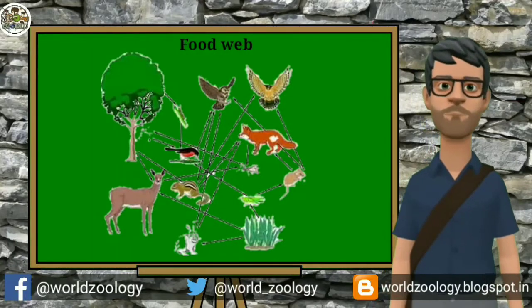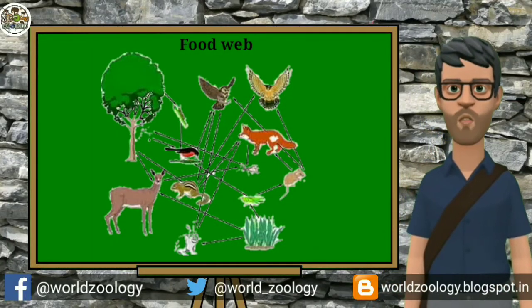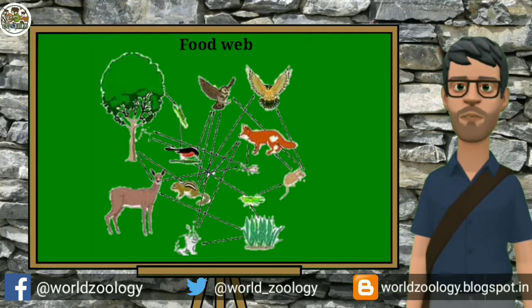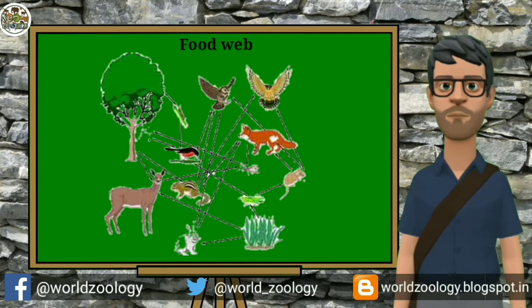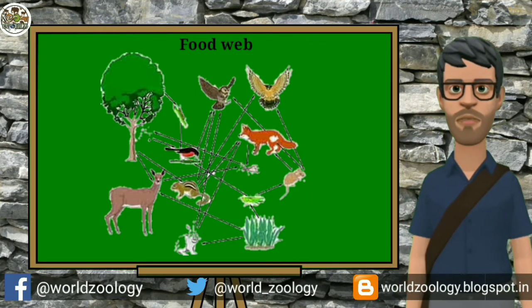In the food web, there are several food chains operating simultaneously. The food web starts from the plants which are producers and ends with the top carnivore.